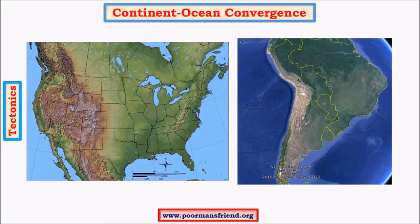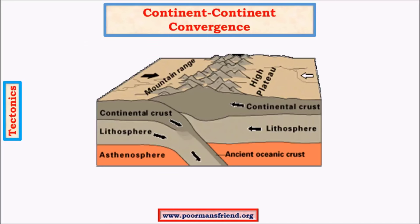In this way there is formation of the Andes and the Rockies. Moving on to continent-continent convergence, the first important example is the Ural mountains. The formation of Ural mountains is similar to oceanic-ocean convergence - here also we have thrusting, but the thrusting is less significant because the two plates are of more or less equal densities.